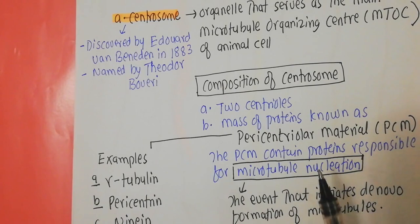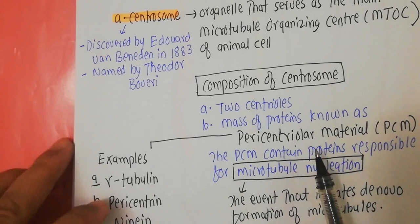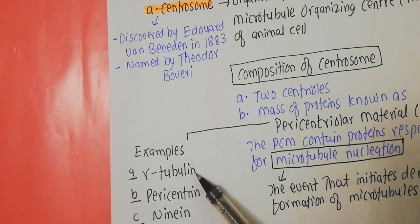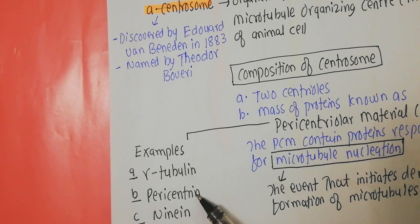Some examples of proteins present in the pericentriolar mass include gamma tubulin, which is different from alpha and beta tubulin — we will discuss that in detail. Another protein present in the pericentriolar mass is pericentrin. There is also another protein called ninein. We will continue our discussion in the next video.